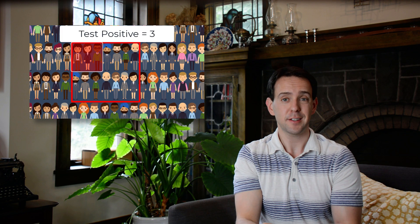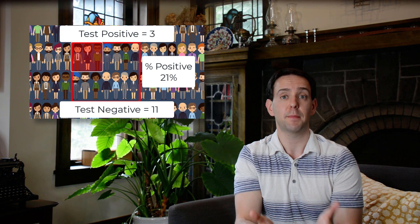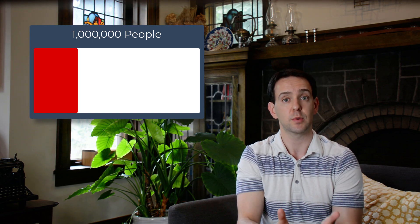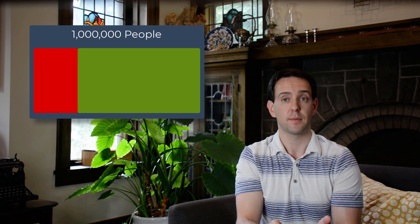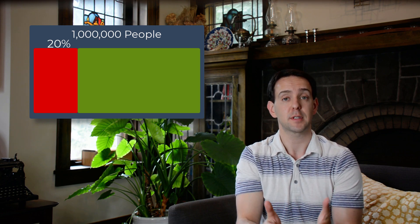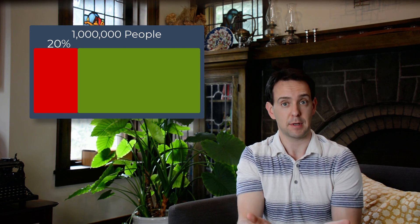First, unlike in our voting example, in reality we don't know how many people are infected, and our best way to estimate this is to test a bunch of people and see how many test positive. Importantly, it's not just how many people in total test positive, but rather what percentage of people test positive relative to those who test negative. The big box now represents the population of people in a hypothetical U.S. state with a million people in it, color-coded so that red represents infected and green represents not infected. We'll pick an infection rate of 20% to make the example easy, though in the real world we don't know the true infection rate — we need to estimate it.